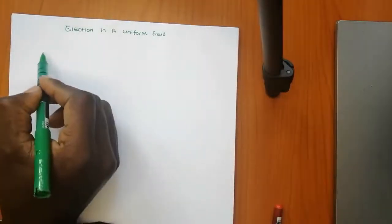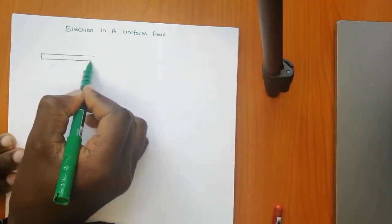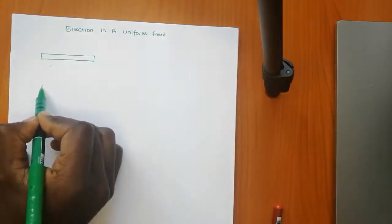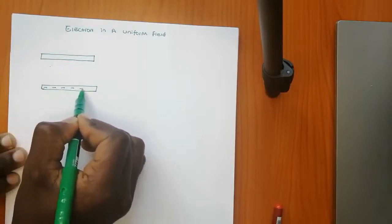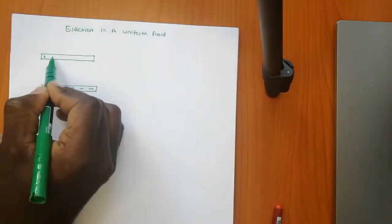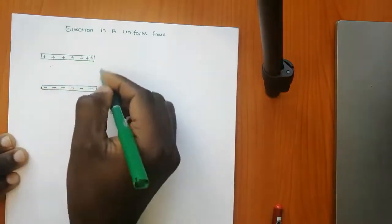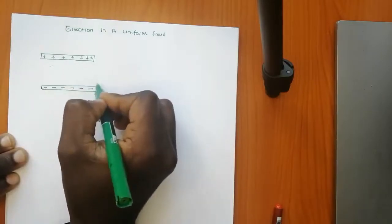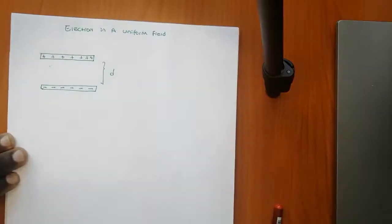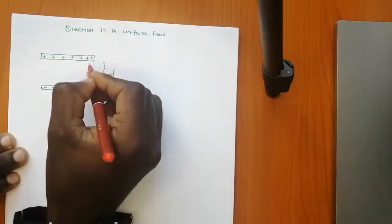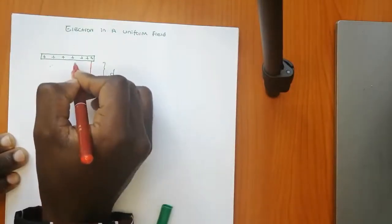Let's say you have two sets of plates — a positive plate and a negative plate. This one is positive. They are separated by a distance d. If you have plates like this, there will be an electric field from the positive plate to the negative plate.